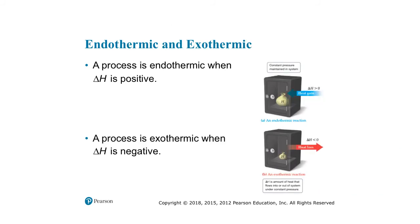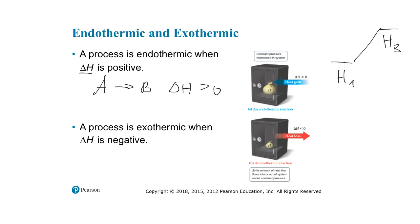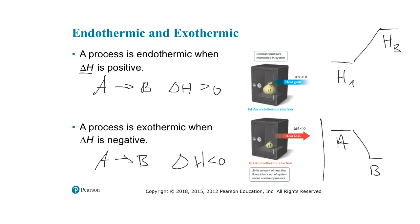We can classify a process or reaction as endothermic when delta H is positive — that's the case where the enthalpy of B is higher than A, so heat must be absorbed. A delta H greater than zero is classified as endothermic. A process is exothermic whenever delta H is negative — A is here and B is downhill relative to enthalpy. Negative delta H is how we classify an exothermic reaction.